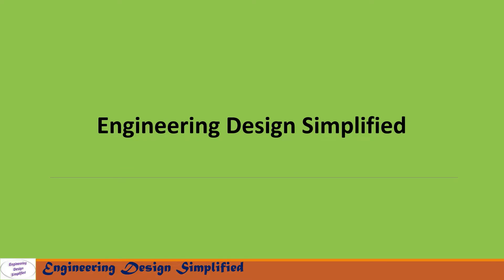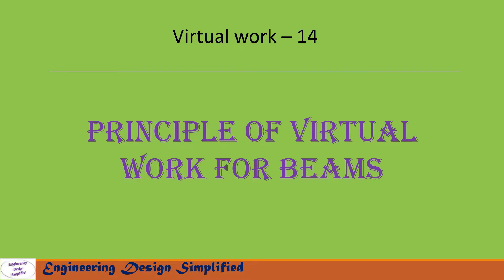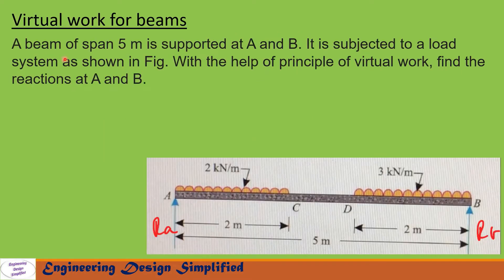Hello engineers, welcome back to Engineering Design Simplified. In this video series I will discuss the principle of virtual work applied for beams. Today's problem: a beam of span five meters is supported at A and B, subjected to a load system as shown in the figure. The beam A-C-D-B has a UDL of 2 kN/m between A and C (2 meters) and a UDL of 3 kN/m between D and B (2 meters). Using the principle of virtual work, find the reactions at A and B.